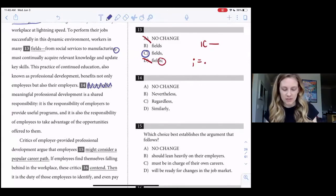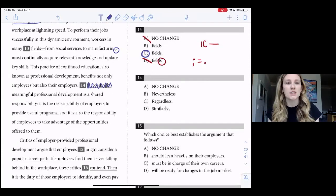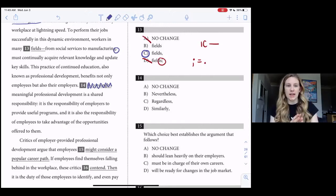So we left off after number 13, so we'll start reading from there. This practice of continued education, also known as professional development, benefits not only employees, but also their employers. So after I read that sentence, I need to understand what that means before skipping over the transition word to read the next part.